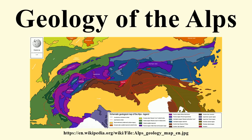The Alps are a fold and thrust belt. Folding and thrusting is the expression of crustal shortening caused by the convergent movements of the European and Apollian plates. At the end of the Carboniferous period, the Hercynian or Variscan Orogeny, in which the supercontinent Pangaea formed from Gondwana and Laurasia, was ended. East of the terranes that now form the Alps was the Paleo-Tethys Ocean. The effects of wind and water eroded and destroyed the Hercynian mountain ranges. In the Permian, the main deposits in Europe were sandstone and conglomerate, products of erosion in the Hercynian mountain range.